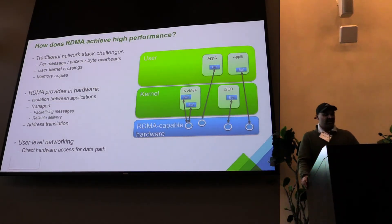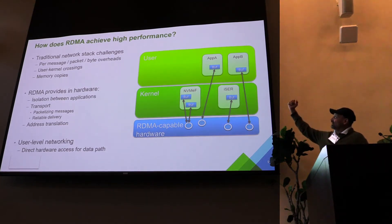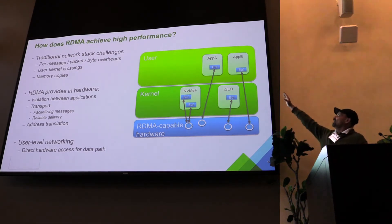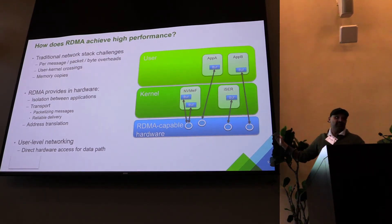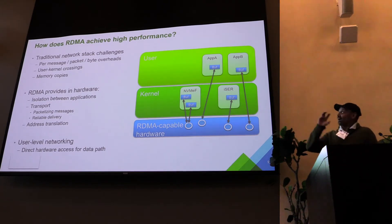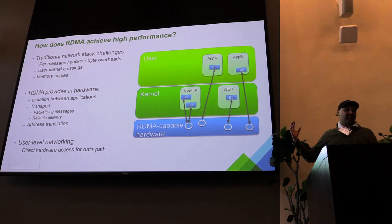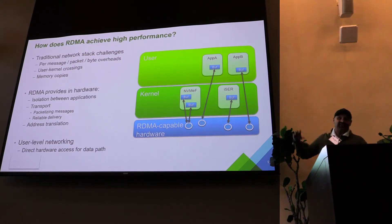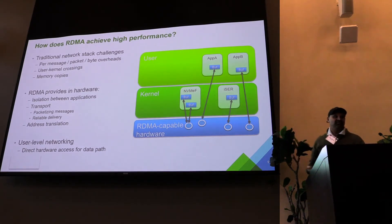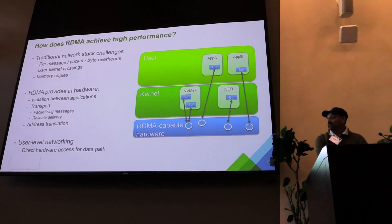Now let's look at how RDMA achieves this performance. Traditionally you have a kernel in between the user and the device. In the case of RDMA, the user space directly talks to the hardware. That gives you capabilities like isolation between applications, packetization of messages, and address translation. Because there's a direct path between the user space and the hardware, a lot of overhead is reduced. So RDMA provides this capability to give you high performance.